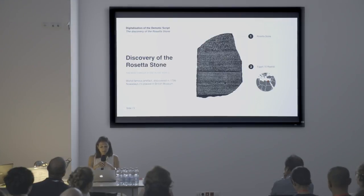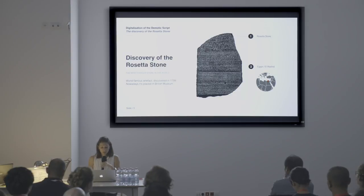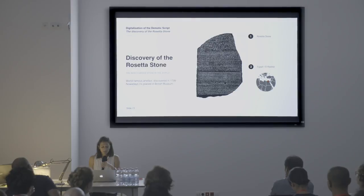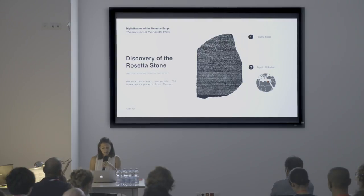At the beginning I would like to explain to all of those who are not familiar with this famous world stone what it is about. The Rosetta Stone is one of the best known textual artifacts from ancient Egypt. The name itself originates from the location where it was excavated — the place Rosetta in Egypt, known in Arabic as El Rashid.